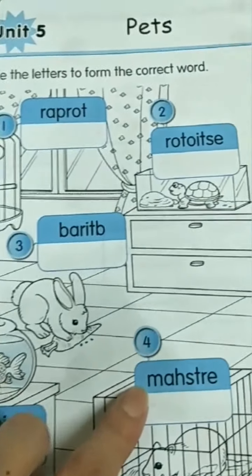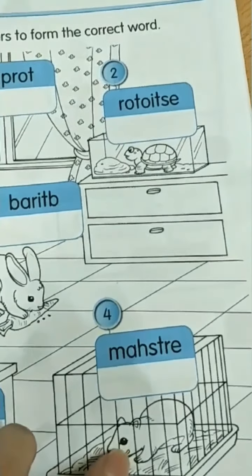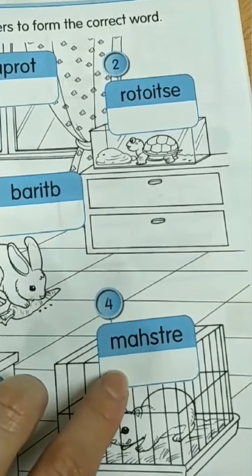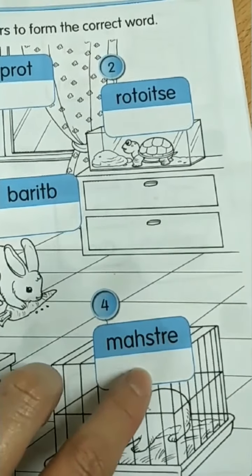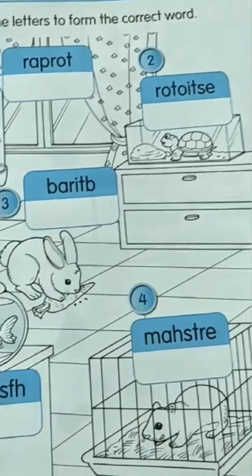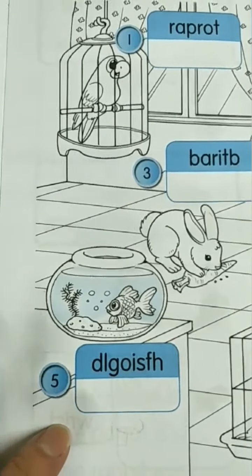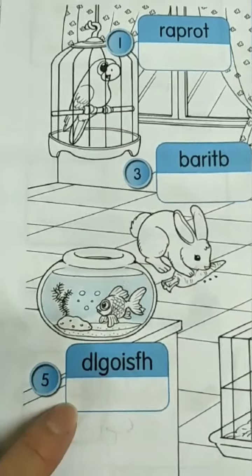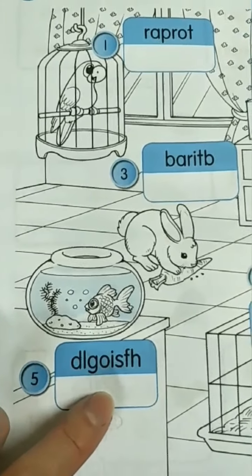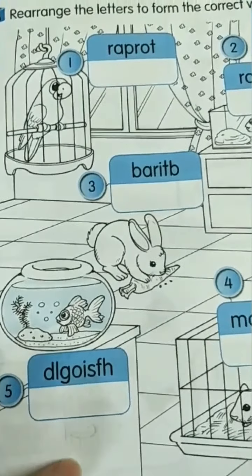Number 4. Do you know what is this? Yes, it's a hamster. H-A-M-S-T-E-R. Hamster. How about number 5? It's a goldfish. G-O-L-D-F-I-S-H. Goldfish.